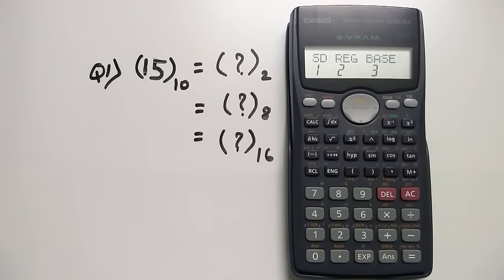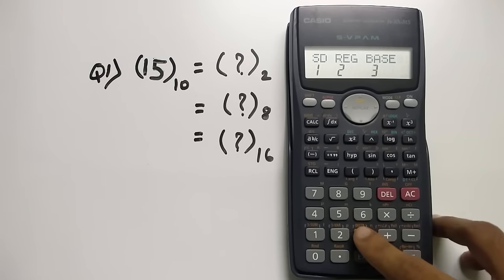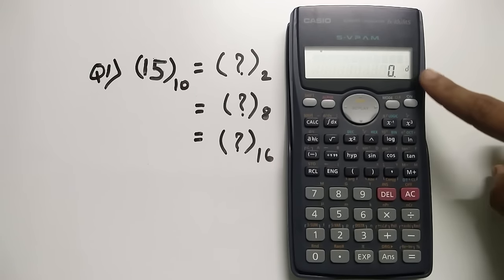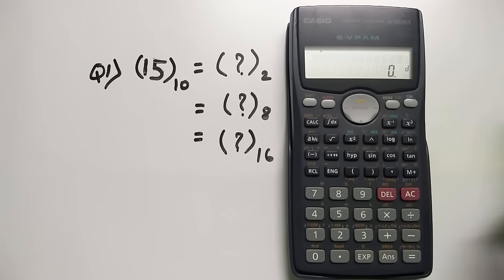As you can see we have to select option number three, that is base. Now as you can see you got a sign of small d which represents decimal value. You can change between these values. Currently as you can see in the question we have to convert 15 in decimal to binary, octal and hexadecimal.